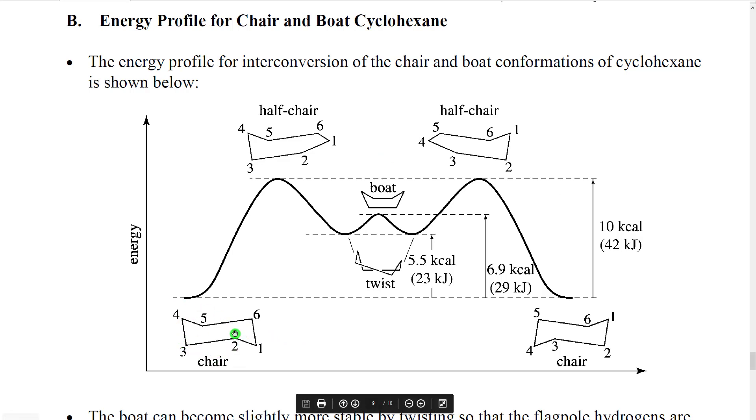Now if you imagine that we wanted to convert to the boat, we might take, for example, atom 1 here and start to fold it up so that it can flip over to be pointing in the other direction. As we do that, we're making these bonds closer to eclipsing until we get to the point where atoms 5, 6, 1, 2, and 3 are all flat in a plane.